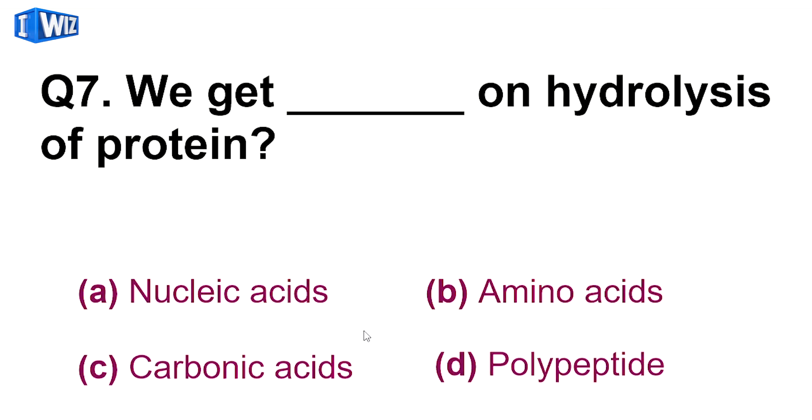Next is, we get dash on hydrolysis of protein. So protein ki hydrolysis se hume obtain hoota hai amino acids, kyunki amino acids ke continuous linkage se hi hume milti hai proteins.